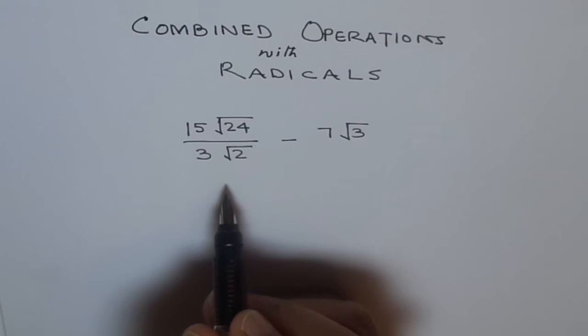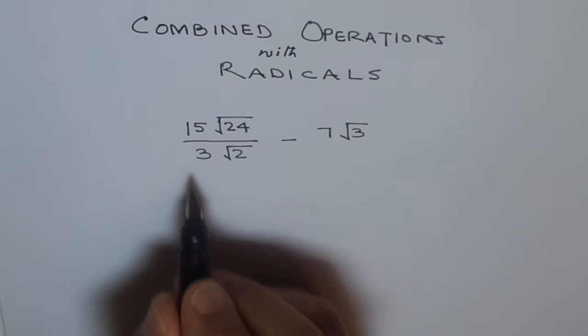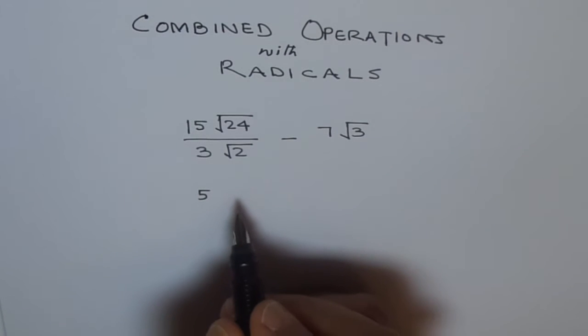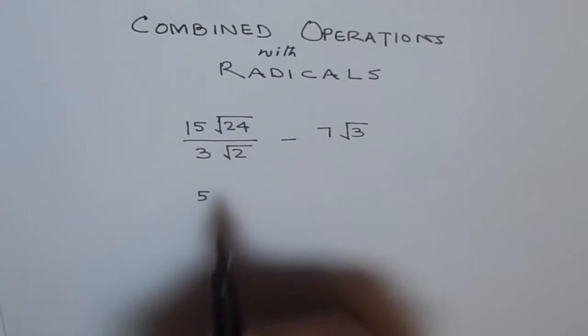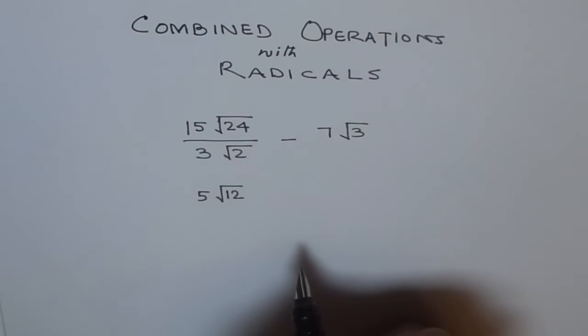So first let's simplify this. Once we simplify, 15 over 3 is 5. 15 divided by 3 is 5. Now here in the radical we can divide 24 by 2. If we divide 24 by 2 we get radical 12. So that's how you can simplify this division.